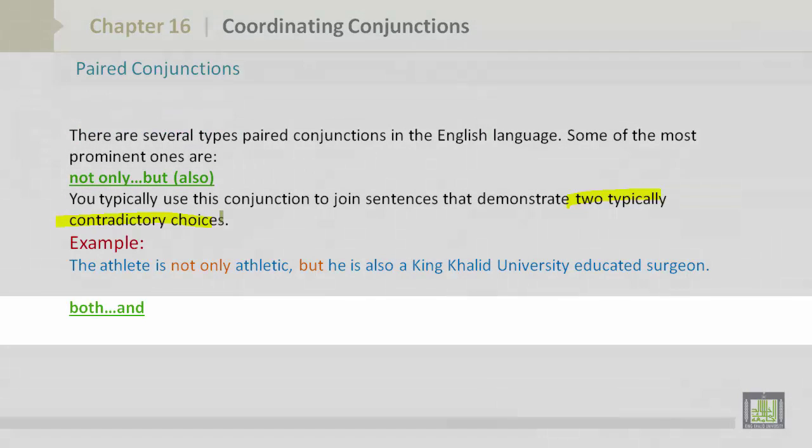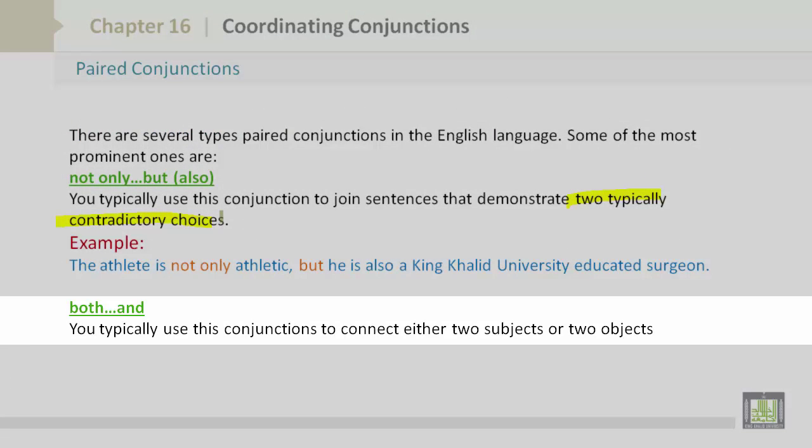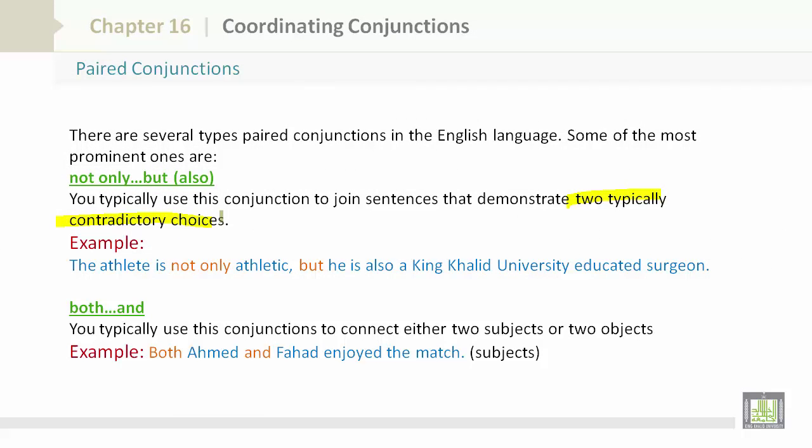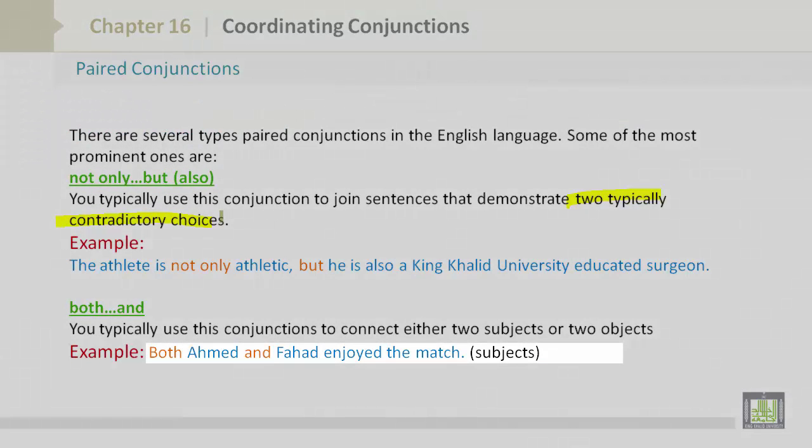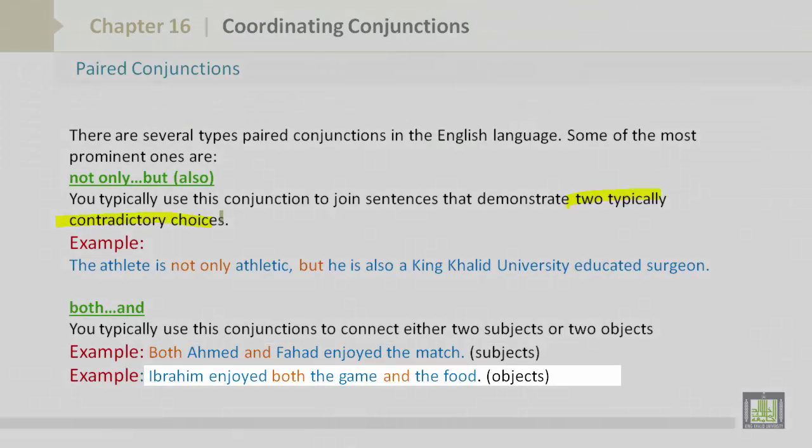Both and. You typically use these conjunctions to connect either two subjects or two objects. For example, both Ahmed and Fahad enjoy the match. This is connecting two subjects. Ibrahim enjoyed both the game and the food.